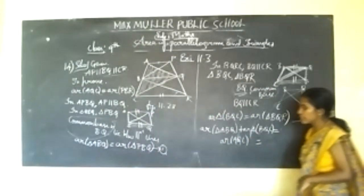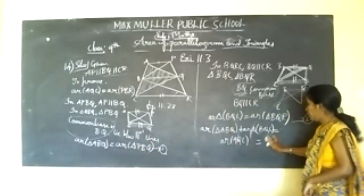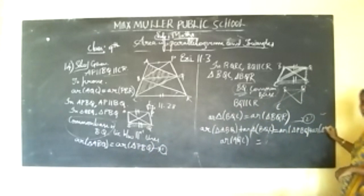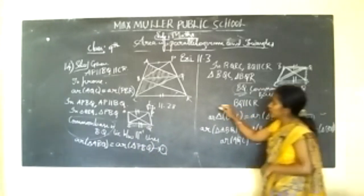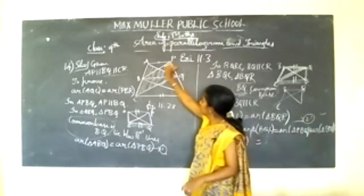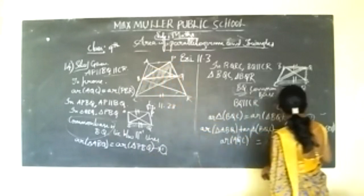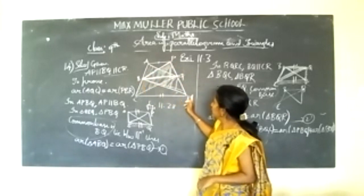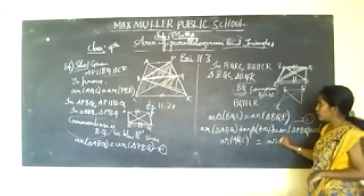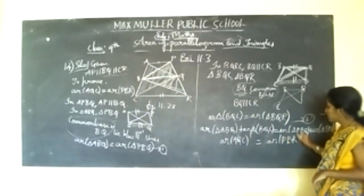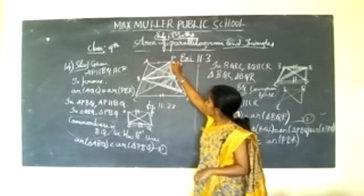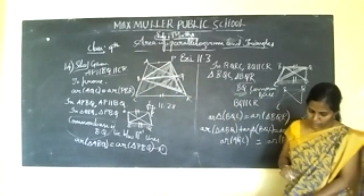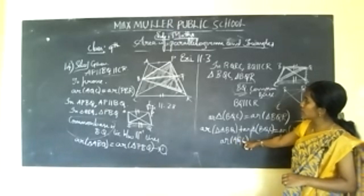Similarly, for the RHS, from equation 1 you have area of triangle ABQ and from equation 2 you have area of triangle BQR. Adding PBQ plus BQR gives you area of quadrilateral PBQR. So we have the conclusion that area of AQC is equal to area of PBQR.